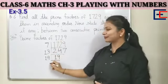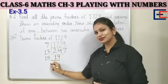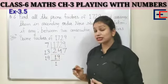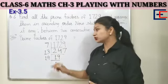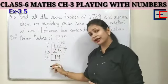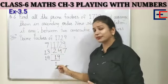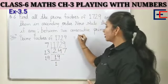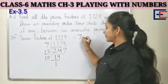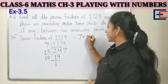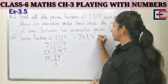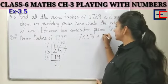We have got all our prime factors. Now we will arrange them in ascending order, which is already in ascending order: 7 multiplied by 13 multiplied by 19.